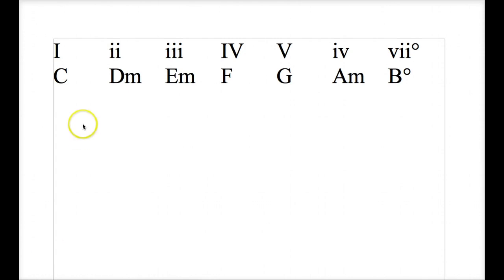So we have the chords in the key of C here written out. The 1, 4, and 5 are major chords and those are indicated by these uppercase roman numerals. The 2, 3, and 6 are minor chords and those are indicated by lowercase roman numerals.